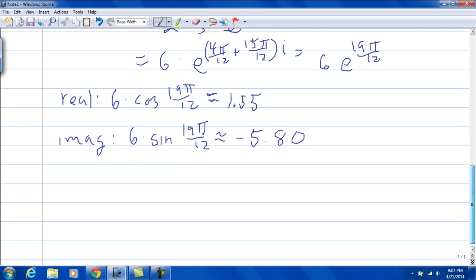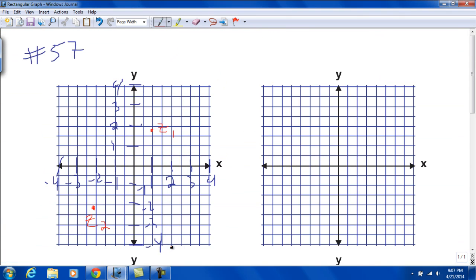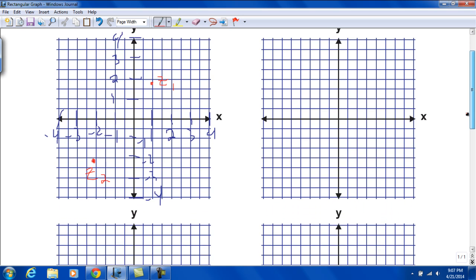Okay, so if I graph this, that's going to be off my graph, isn't it? So we said it was 1.55, right around there, and then negative 5 point something, so it's going to be way down here. Right down there. That's the product. I hope that helps.